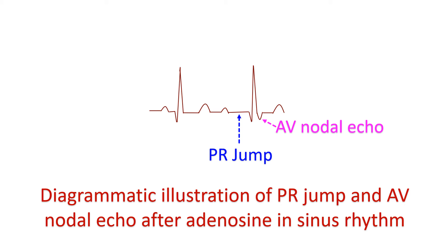AV nodal echo is defined as a retrograde P wave at the end of the QRS complex, as seen in the case of the atrial ectopic in the previous ECG. An echo beat can also be followed by AVNRT, similar to what occurred after an atrial ectopic beat in the previous case. Thus, adenosine is useful in demonstrating the presence of dual AV nodal physiology from surface ECG, which would indicate that the clinical tachycardia is AVNRT rather than AVRT.